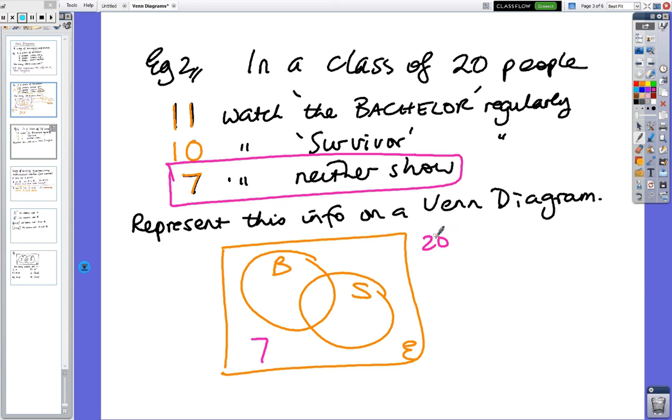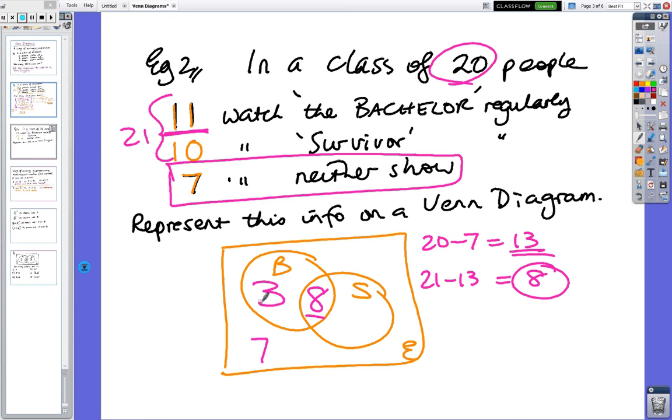We've got 20 people minus 7 equals 13. So there's 13 people who are going to go inside the circles. I look at those numbers and I've got 21, so I got 21 minus 13 equals 8. So 8 is in the double up. Then I go back to the information. There's 11 people, but I've already got 8, so there's 3. There's 10 people, but I've already got 8, so that's 2. So they're your answers.